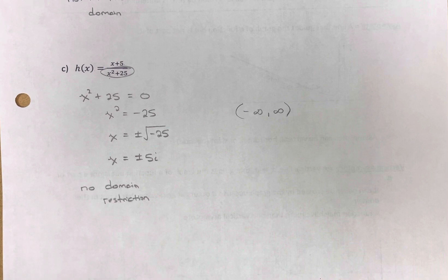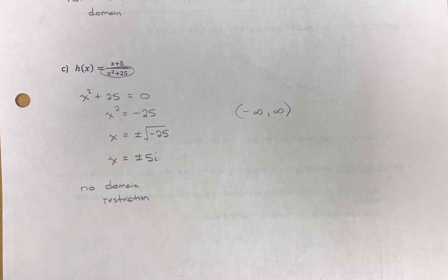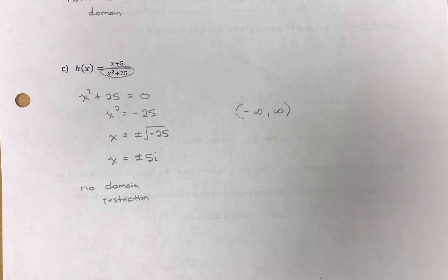So there you have it. With rational functions, you want to focus on the denominator because that's where problems occur — whenever the denominator winds up being zero, those values are excluded from the domain.